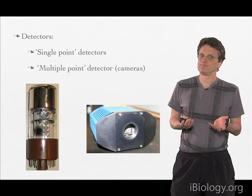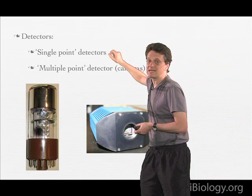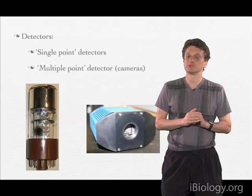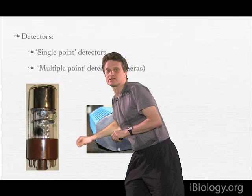In this talk I will discuss two different types of detectors. One are single point detectors — they measure only a single point of light at a time. The other are multipoint detectors, so those are detectors that measure multiple points simultaneously — i.e. cameras.